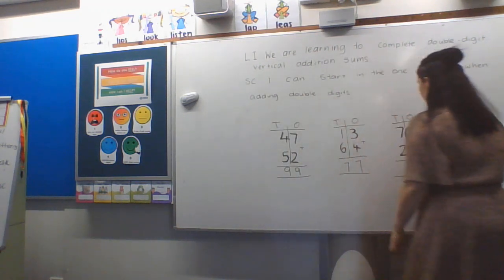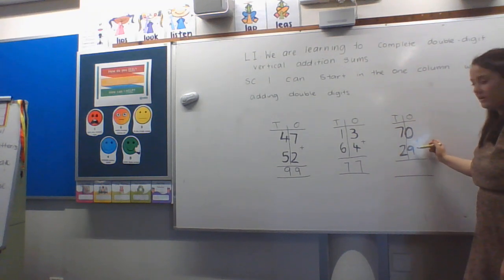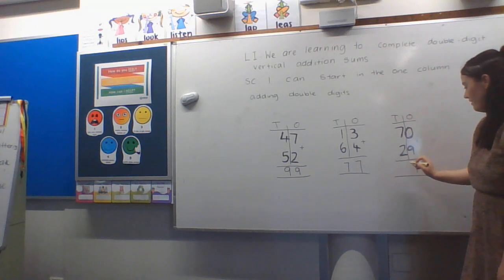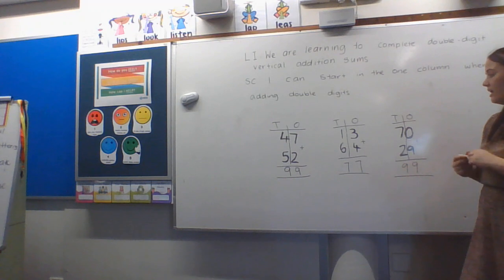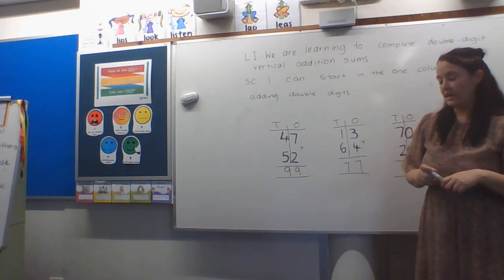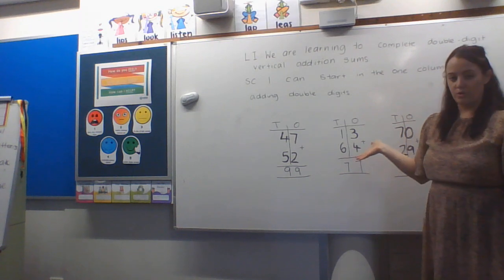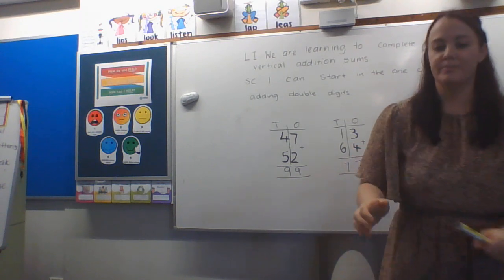And now the last one here, zero plus nine super duper easy is nine. Seven plus two is nine. We have ninety-nine. Now it's your turn to do it with your sheet. There are no carryovers so you guys should be fine. One more. Three. Two. Two.